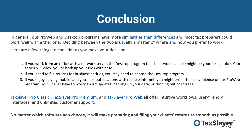In general, our ProWeb and desktop programs have more similarities than differences, and most tax preparers could work well with either one. Deciding between the two is usually a matter of where and how you prefer to work. If you work from an office with a network server, the desktop program might be your best choice — your server will allow you to back up your files with ease. If you need to file returns for business entities, you may need to choose the desktop software. If you enjoy staying mobile and seek out locations with reliable internet, you might prefer the convenience of ProWeb — you'll never have to worry about updates, backing up your data, or running out of storage.